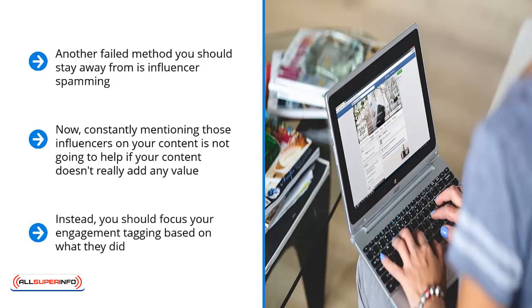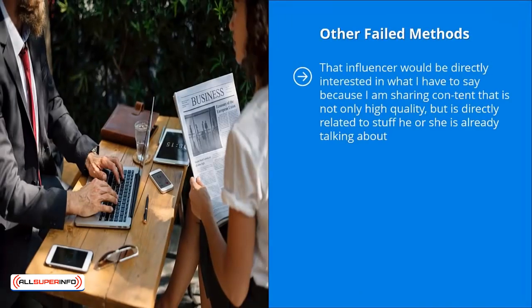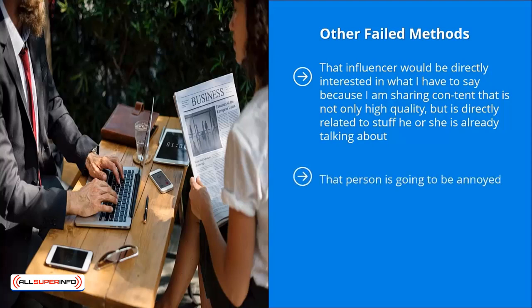Instead, you should focus your engagement tagging based on what they actually did. For example, if an influencer was talking about recent trends in athletic shoes, then that person would be fair game for an article I post regarding the latest trends in athletic shoes and what they mean for the bottom line of large footwear apparel companies. That influencer would be directly interested because I'm sharing content that is not only high quality, but directly related to what he or she is already talking about. Compare this with an influencer who talks only about Forex, and I tag that person when I'm talking about Bitcoin — that person is going to get annoyed. Do you see the difference?